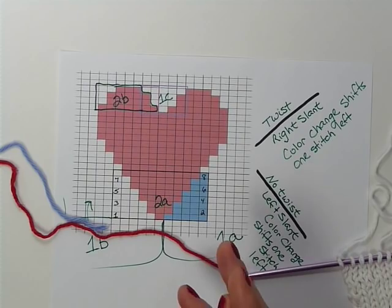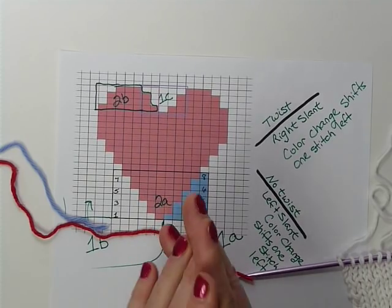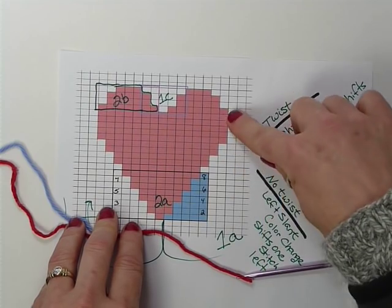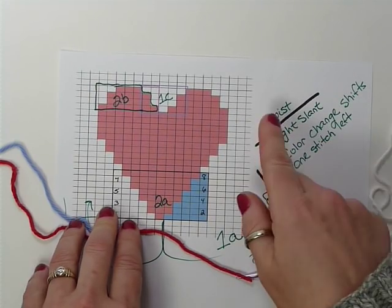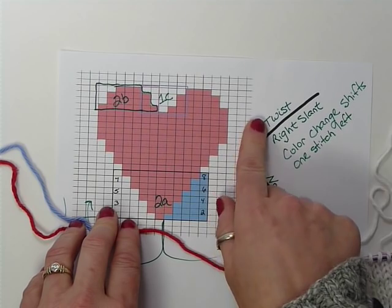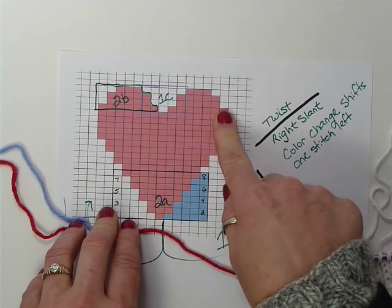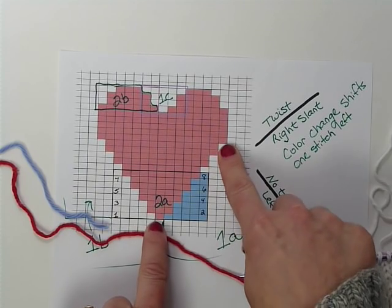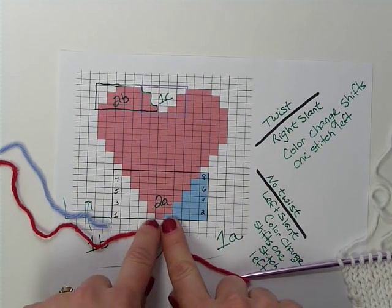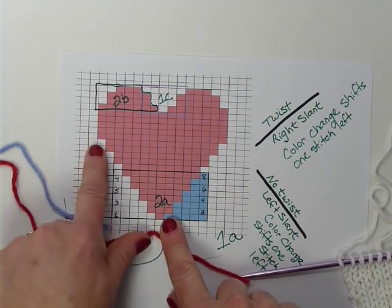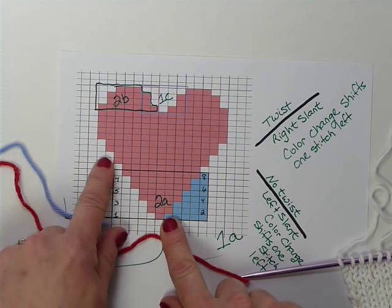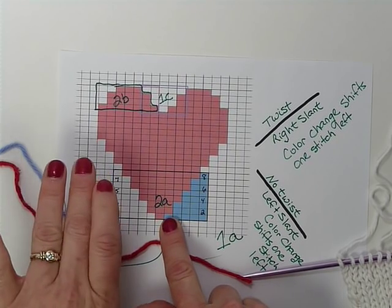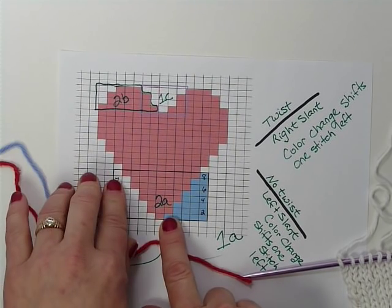The other thing that you need to know is twisting the yarn. When in doubt, twist the yarn. Always twist the yarn on vertical color changes. That would be where you're not creating any slant in your color. When you create a right slant in your color change, you will always twist your work. When you create a left slant, you do not have to twist your work. In fact, I think it's better if you don't twist on a left slant because it tends to distort the stitch just a little bit.